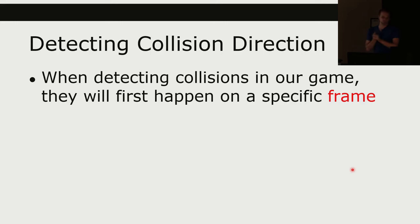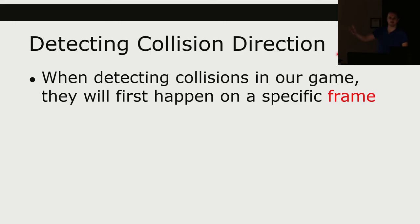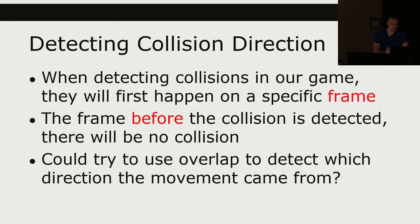In order to do this resolution, how do I detect whether something was coming from the right, left, top, or bottom? In Super Mario Brothers, if you hit a brick from the bottom as Big Mario it gets destroyed, but if you hit a brick from the top you just stand on it. When you detect collisions in a game, it will first happen on a specific frame — it didn't happen on frame 16, but then it did on 17. So the frame before the collision was detected, there was no collision. We can try to use the overlap to detect which direction the movement came from.